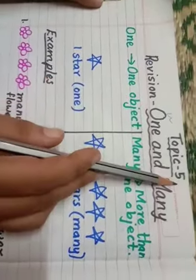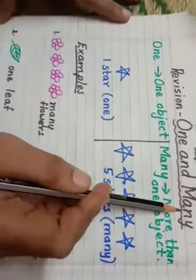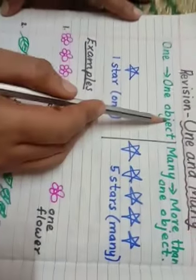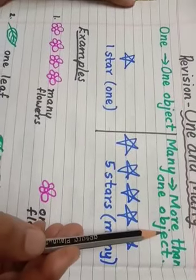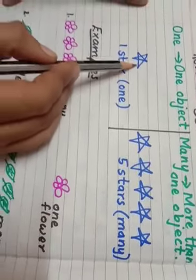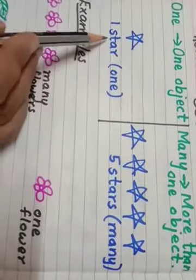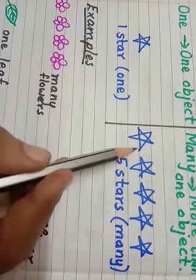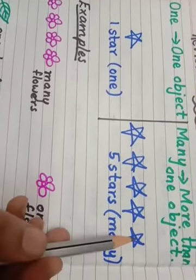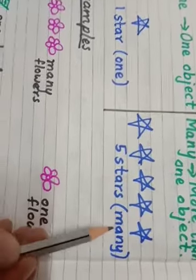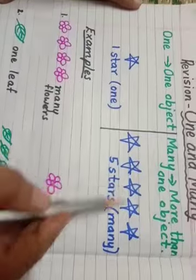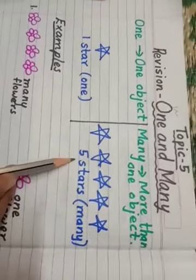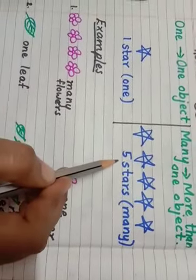Revision Topic 5: One and Many. One means one object. Many means more than one object. See here. I have drawn one star. One star. Five stars. That are many. You have to count the objects. Then, you will come to know whether they are one or many.